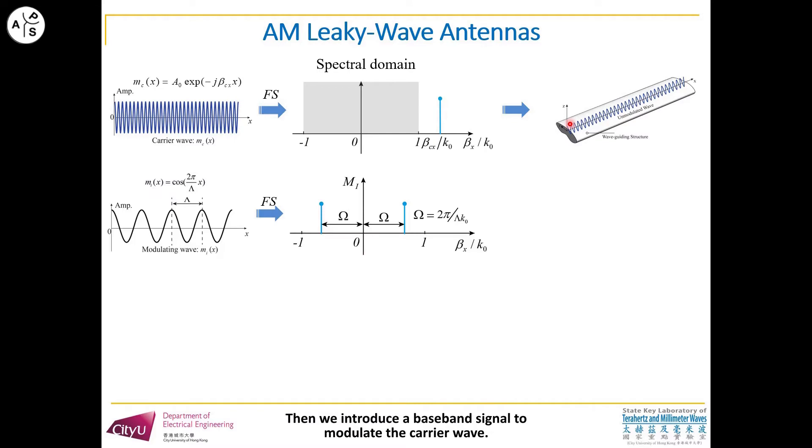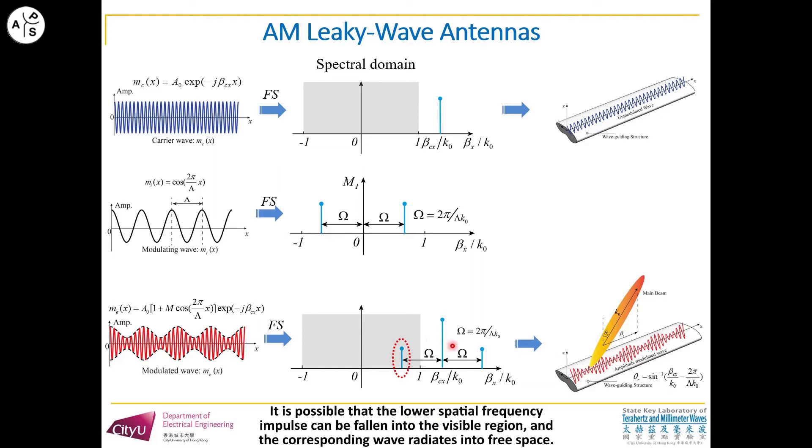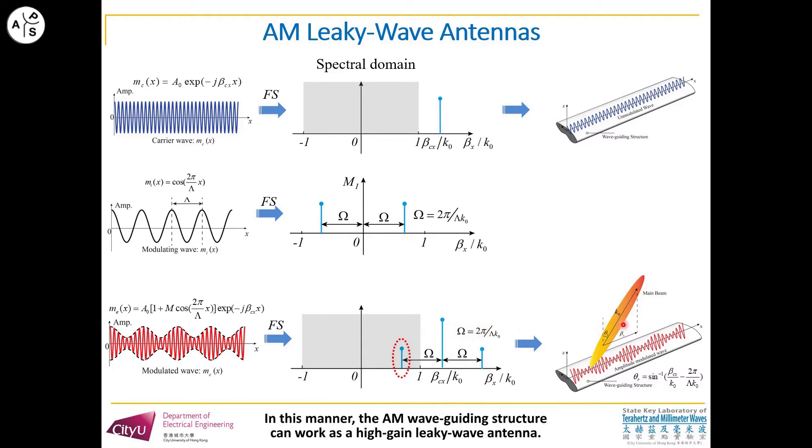Then we introduce a baseband signal to modulate the carrier wave. This is the waveform of the modulated wave and its spatial frequency distribution. We can see that there are three frequency impulses here. It is possible that the loaded spatial frequency impulse can be moved into the visible region and the corresponding wave radiated into free space. In this manner, the AM wave-guiding structure can work as a high-gain leaky antenna.